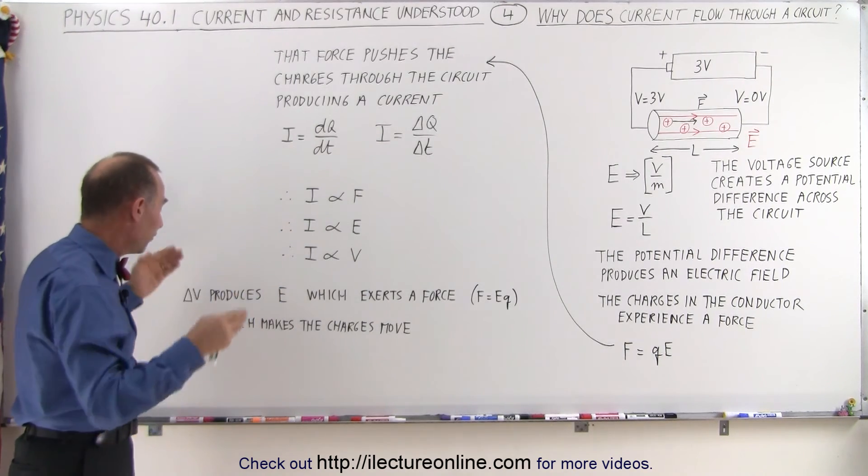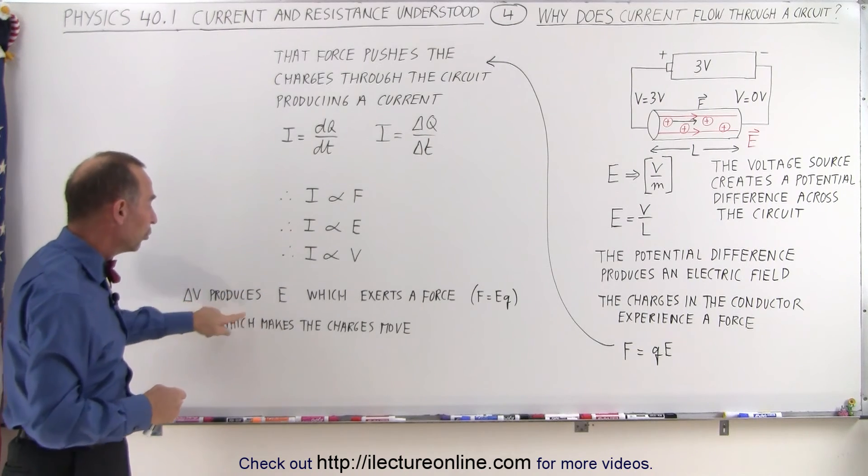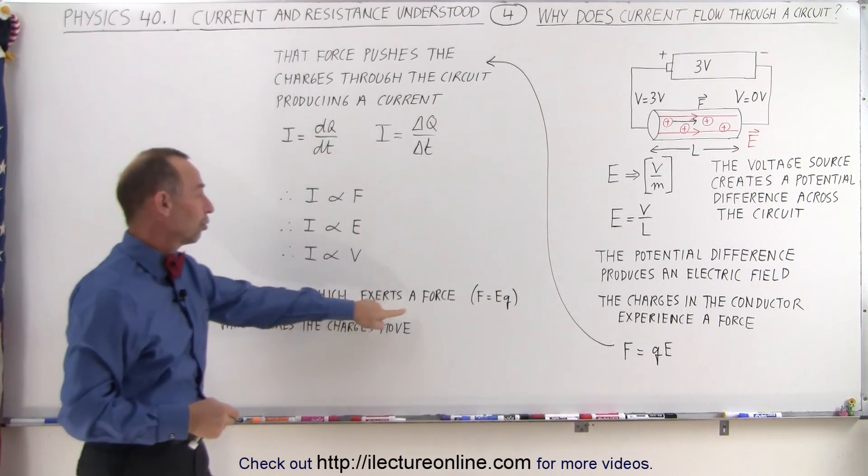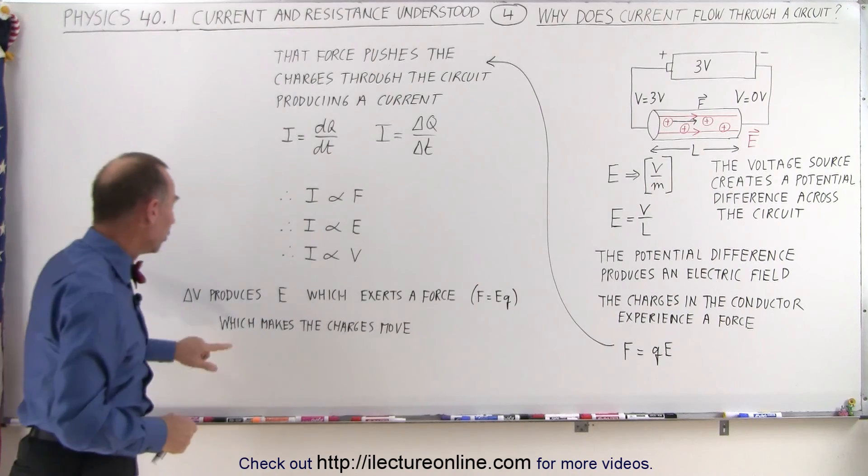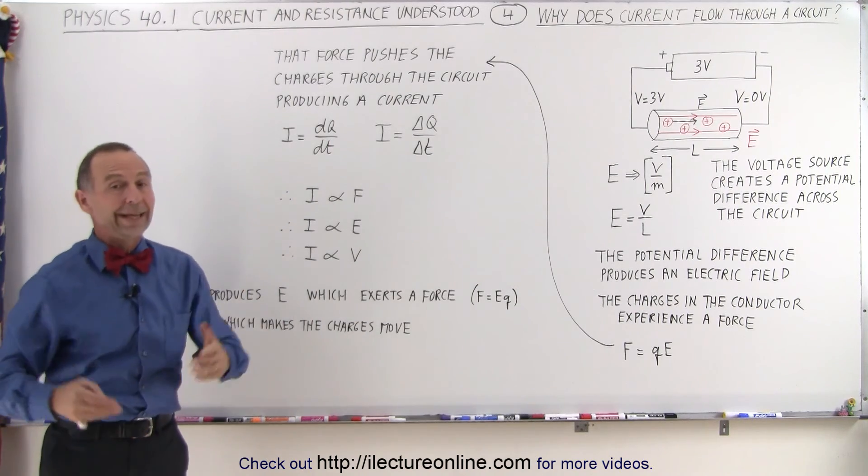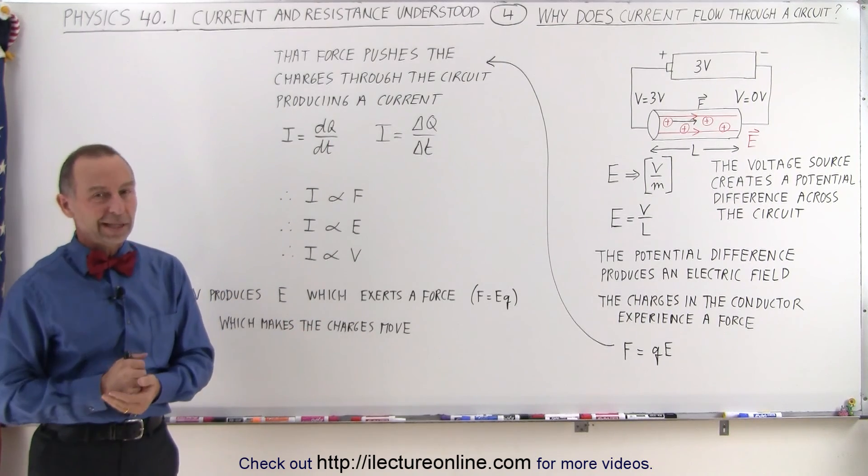And so, a difference in potential, the delta V produces an electric field, which exerts the force F equals qE, which makes the charges move. And that's why there's a current in the circuit.